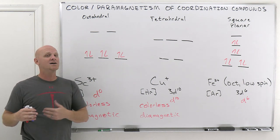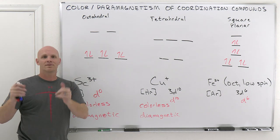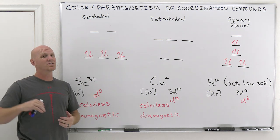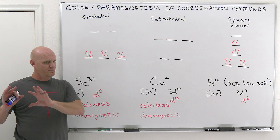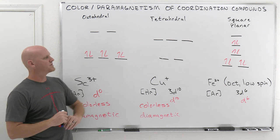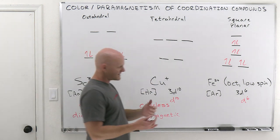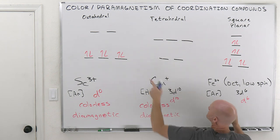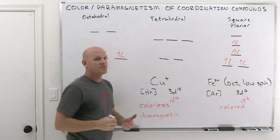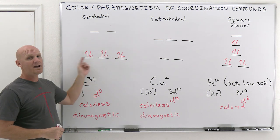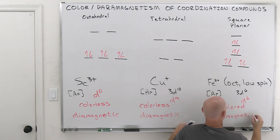Some students may learn an exception for D5 where all electrons are unpaired and promoting one requires switching its spin, which is rare. But most students just learn the two extremes: D0 or D10 is probably colorless, D1 through D9 is colored. For Fe²⁺ low spin octahedral with six d-electrons filled low spin, all the electrons are paired up. So it's going to end up being diamagnetic.